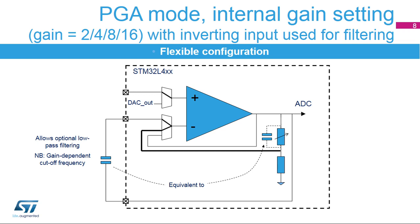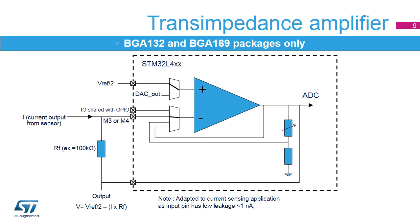The op-amps also support external connections on outputs and the non-inverting input to create the PGA mode. This enables the connection of an external capacitor to add low-pass filter characteristics to the PGA configuration. The op-amps have a very low leakage inverting input pin to support the current sensing application.